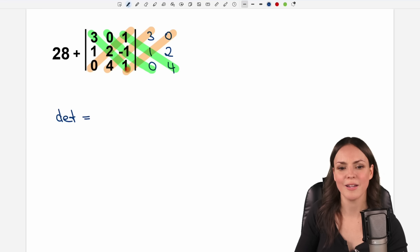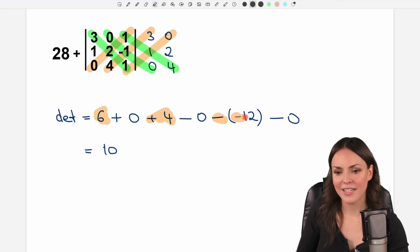So we have 3 times 2 times 1, which equals 6. And then we add the same thing with the next diagonal. 0 times negative 1 times 0 equals 0. We add the same thing with the last green diagonal. 1 times 1 times 4 equals 4. And then we always subtract the same things with the orange ones. 0 times 2 times 1 equals 0. We subtract the next orange one. 4 times negative 1 times 3 equals negative 12. And we subtract the last orange one. 1 times 1 times 0 equals 0. In total, we have 6 plus 4, which equals 10. Negative negative 12 is positive 12. So in total, we have 22 as a result for the determinant of this matrix.